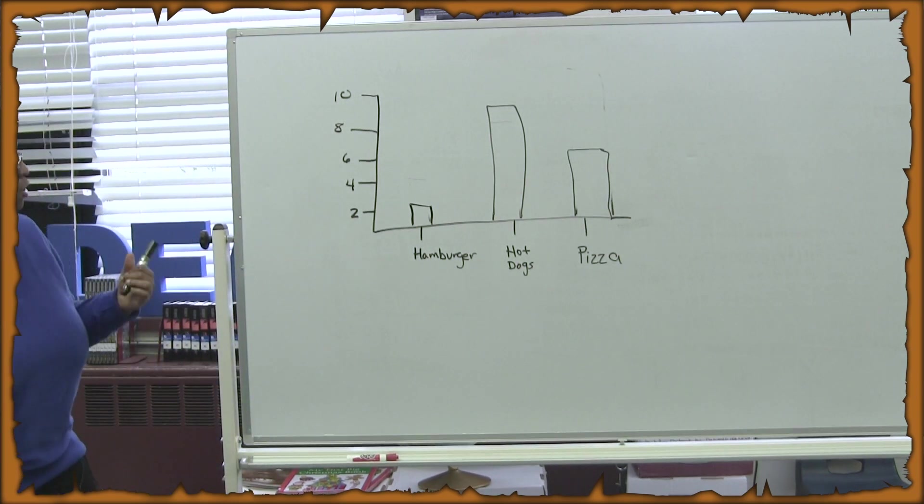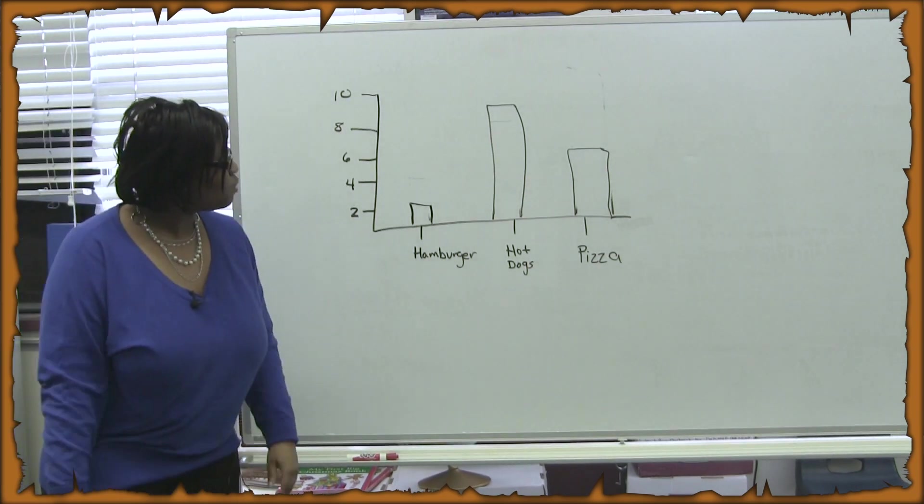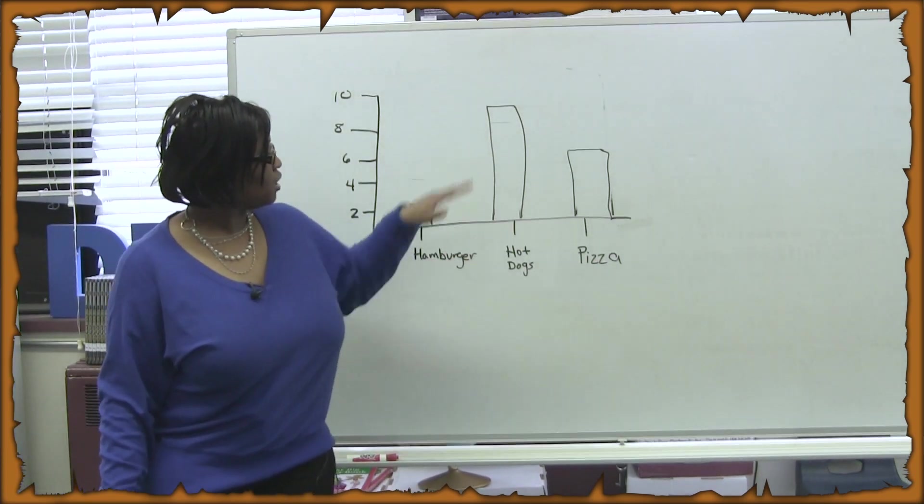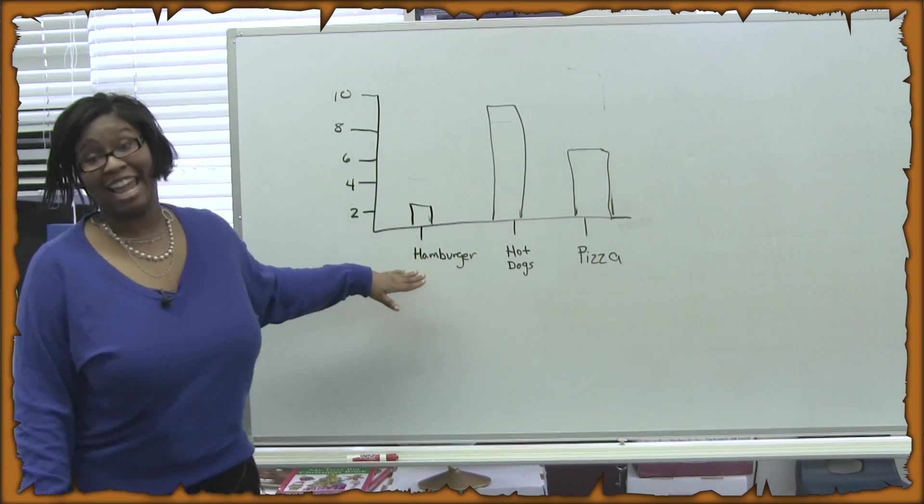So, our predictions were kind of different. Because we have more people liking pizza. And now what we see is more people like hot dogs. And the least amount of people like hamburgers.